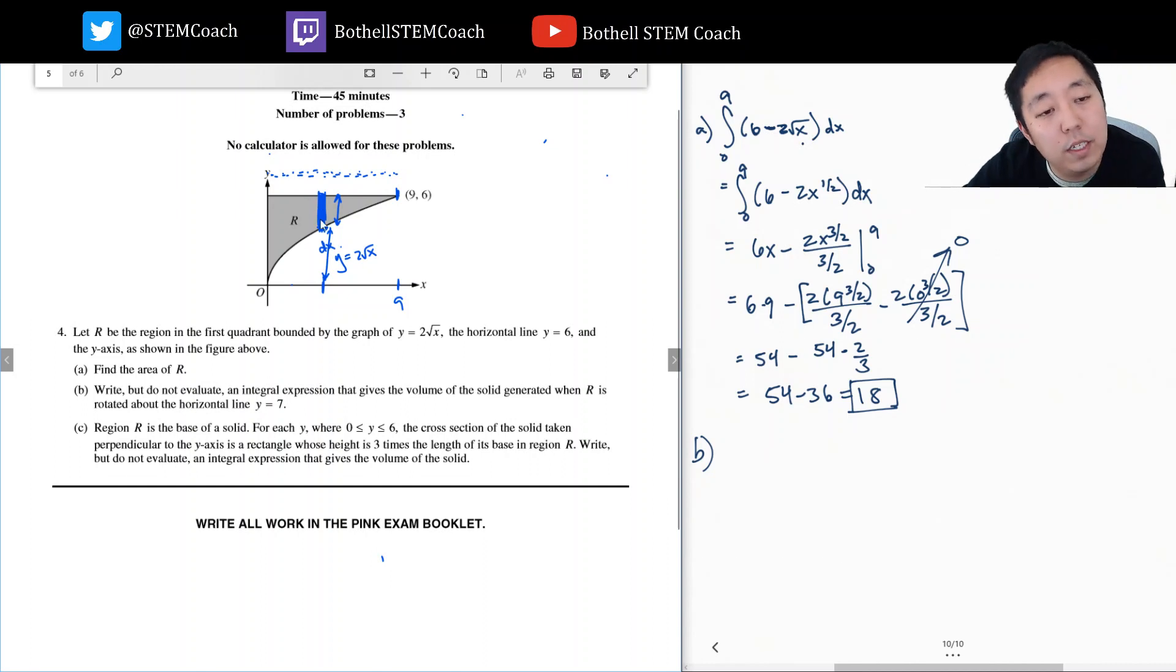So if I take my representative slice and I revolve it around here, it's going to create a disk. Let's look at some of the parameters of the disk. This would be the inner radius, and this distance would be the outer radius.